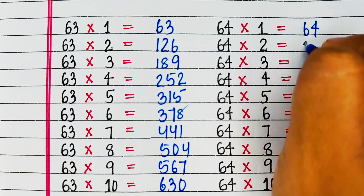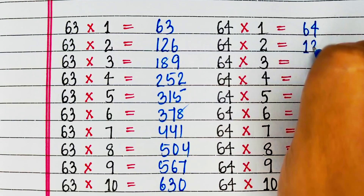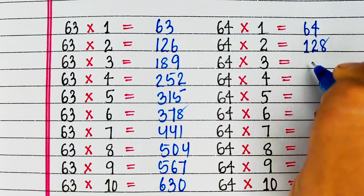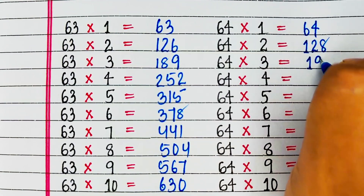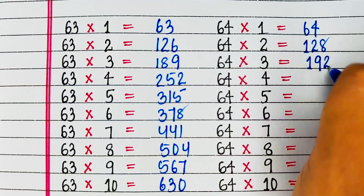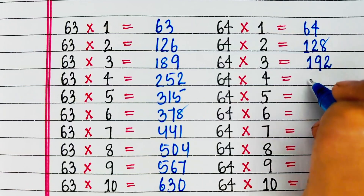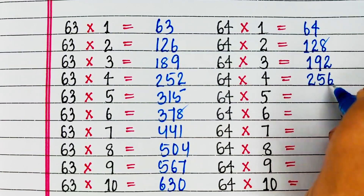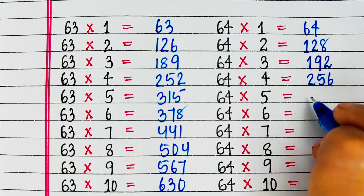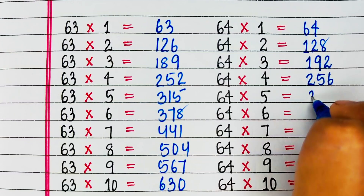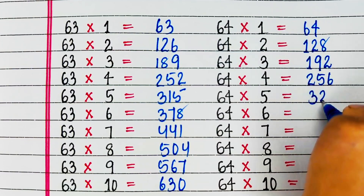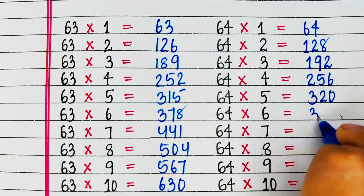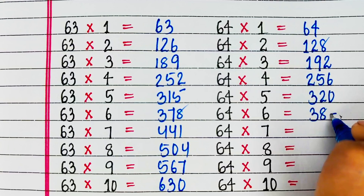Next is table of 64. 64 1s are 64, 64 2s are 128, 64 3s are 192, 64 4s are 256, 64 5s are 320.